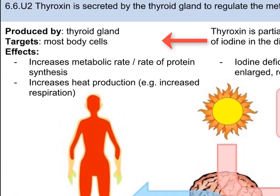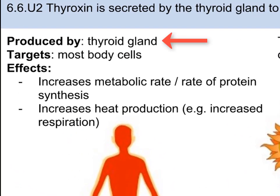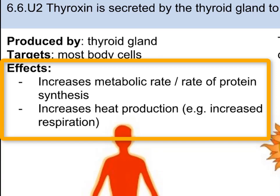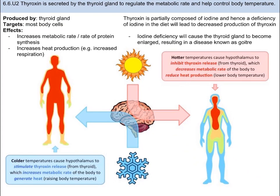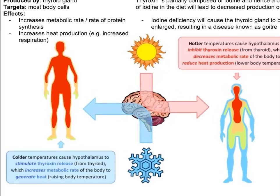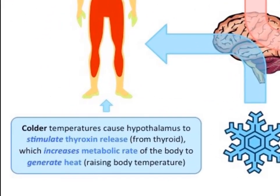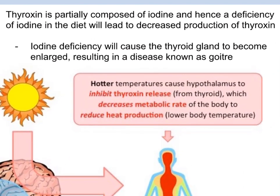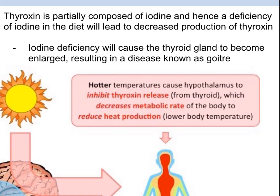Another hormone is thyroxin. It is produced in the thyroid gland and is responsible for signals given from the hypothalamus. Thyroxin acts on nearly every single tissue in the body, and the main role is to increase the basal metabolic rate, which is the amount of energy the body uses at rest. It is important in controlling growth rate and also controlling our body temperatures. Cold temperatures stimulate thyroxin release, increasing the metabolic rate. When the basal metabolic rate increases, the body's processes speed up and the temperature increases. In hotter temperatures, the exact opposite happens — thyroxin is inhibited, decreasing the metabolic rate and reducing temperature.